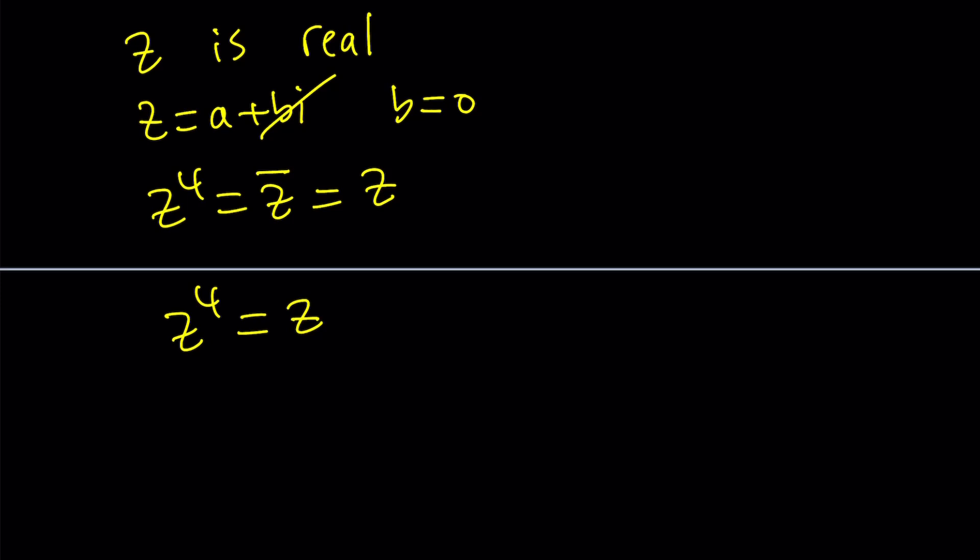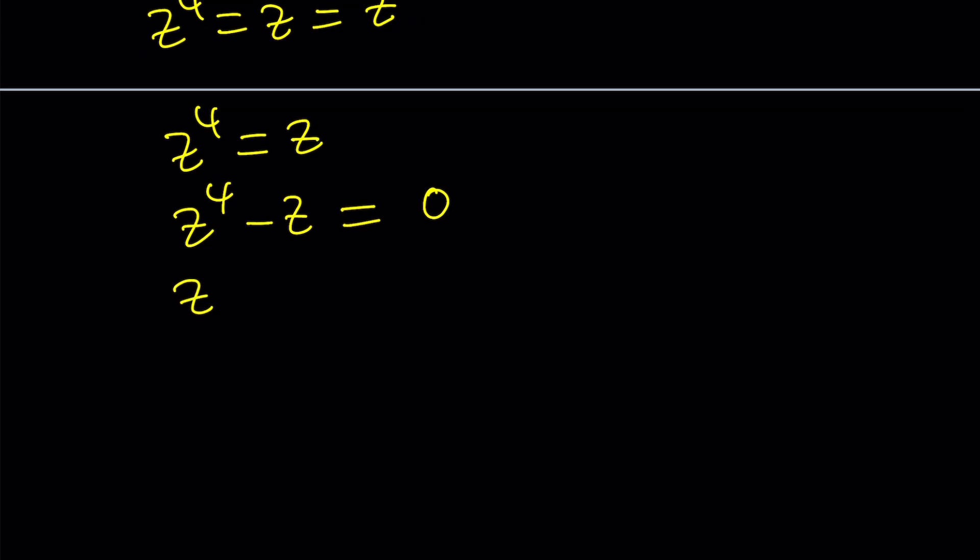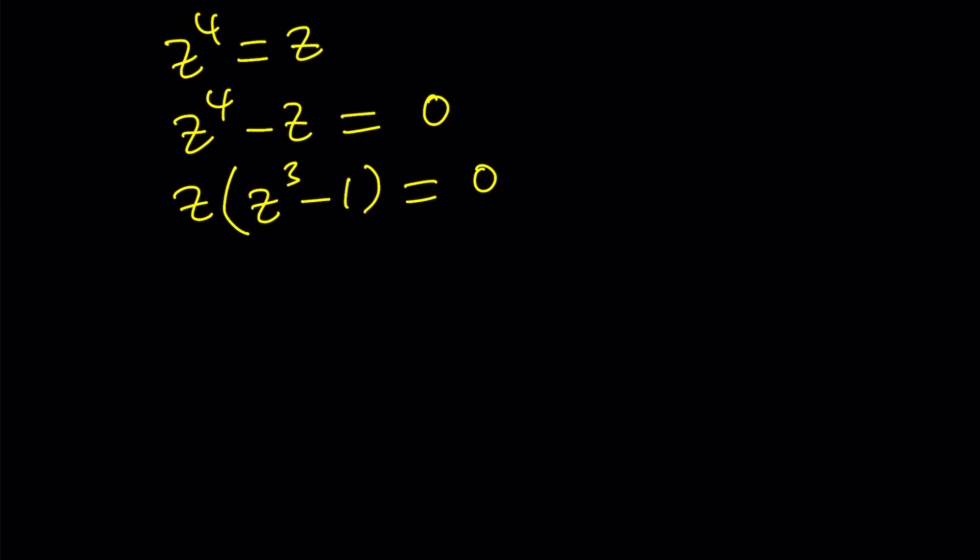How do you solve such equations? Never divide by z. Always put everything on the same side and set the whole thing equal to zero. That's the safest way to solve equations. Now we can factor this. Take out a z and then we're going to get z cubed minus one equals zero. From here we get two branches. Either z is zero or z cubed is equal to one.